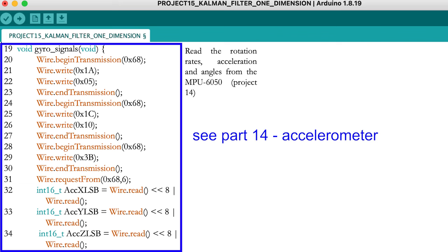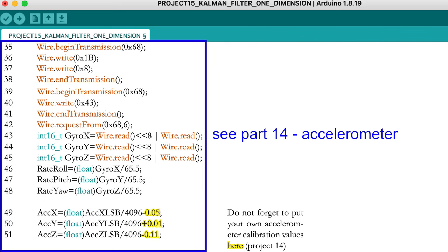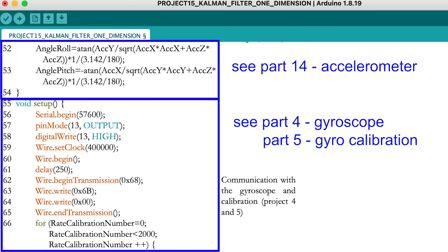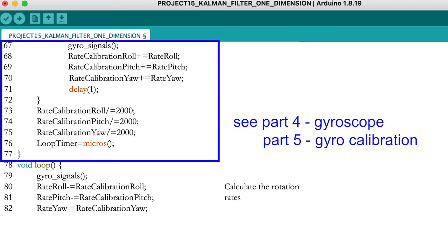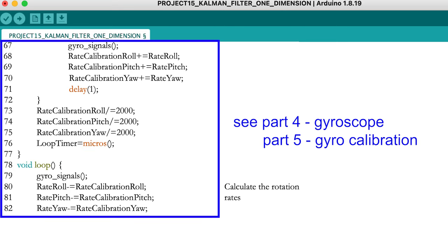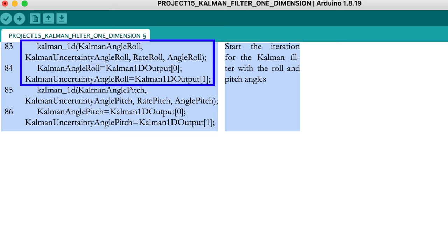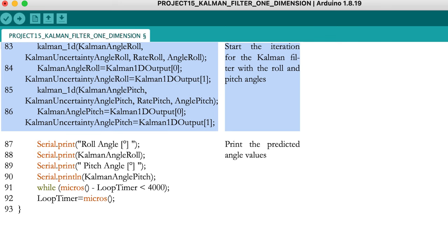Use a function to read the rotation rate and angles from the MPU 6050, and do not forget to put your own accelerometer calibration values for the numbers highlighted in yellow, before calculating the accelerometer roll and pitch angles. The setup part where you communicate with the gyroscope and calibrate it comes straight from parts 4 and 5. End the setup part and start the loop part with the calculation of the rotation rate. Now that the rotation rates from the gyro and the angles from the accelerometer are measured, you can start the Kalman filter function. The first Kalman filter will calculate the roll angle and needs the uncertainty on the Kalman angle, together with the measured rotation rate and angle. The output of the filter will give you the updated Kalman angle and its associated uncertainty. Repeat the same lines for the pitch angle and print the predicted angle values.